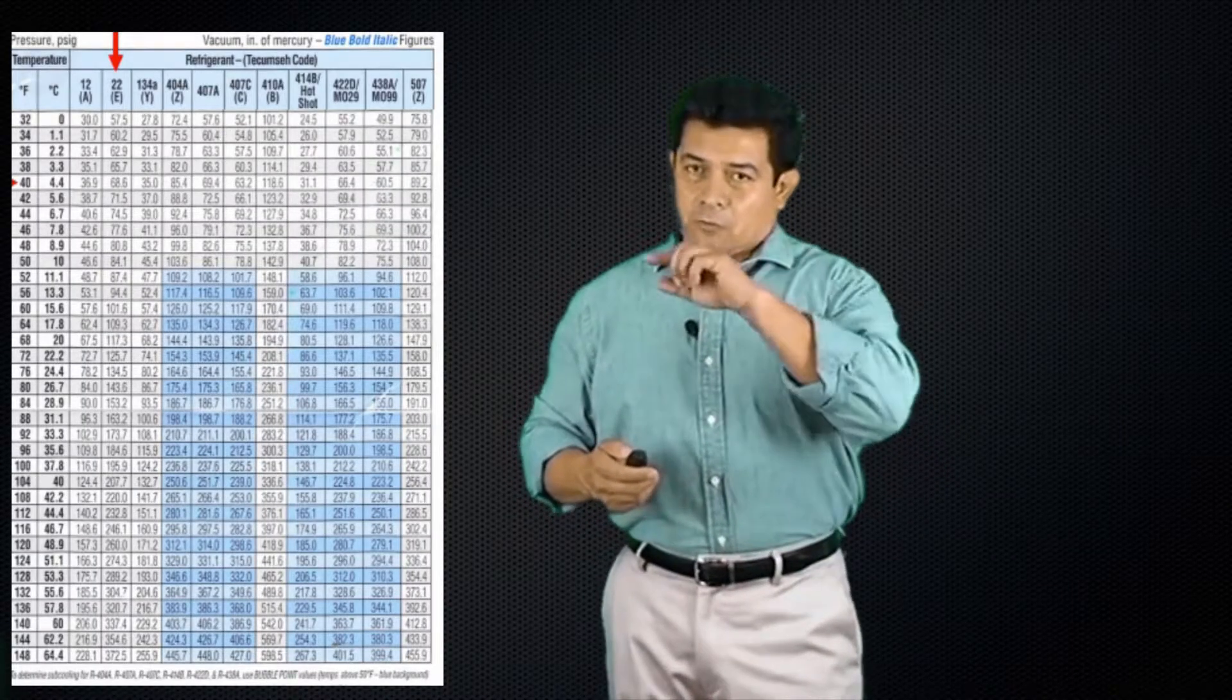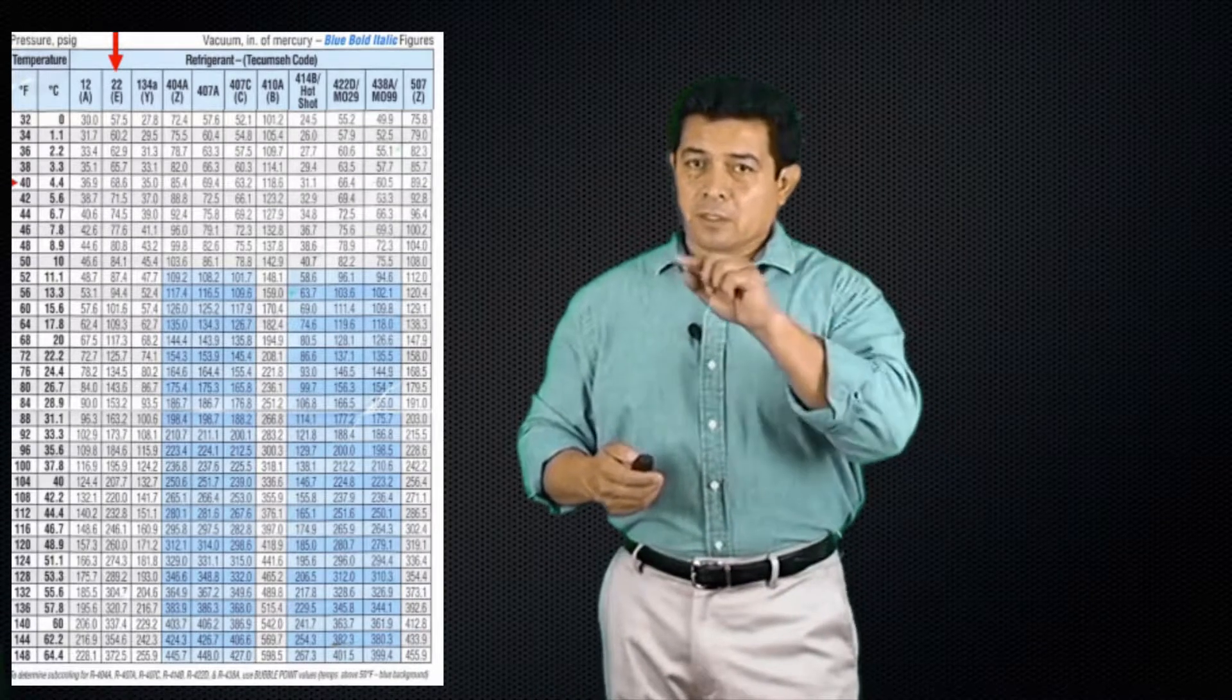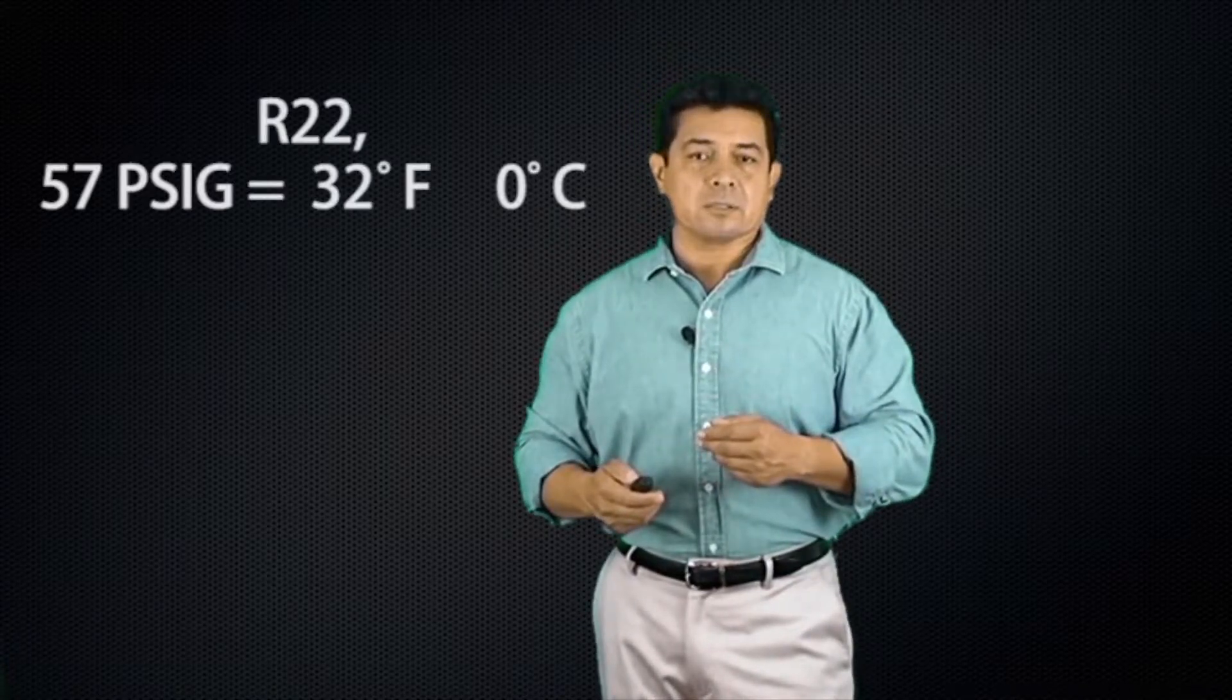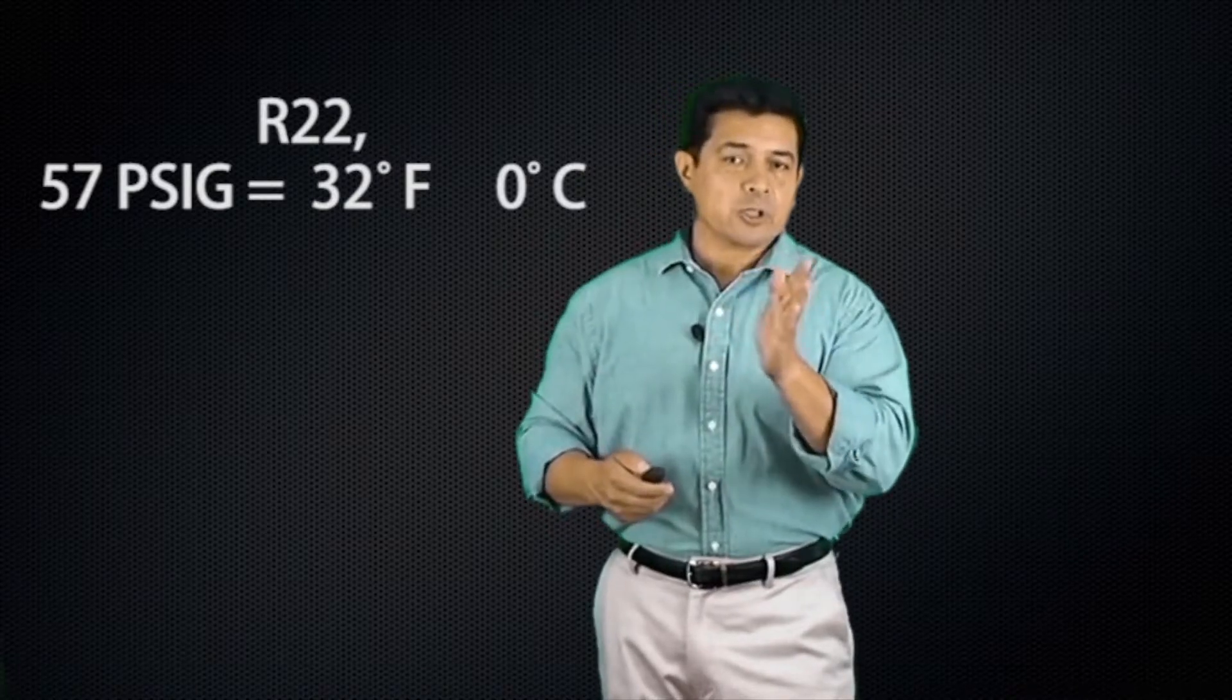Now, if you think about 32 degrees Fahrenheit or zero degrees Celsius, what happens at those temperatures? Well, water starts to freeze. So, if we were to look at a PT chart and we look at 32 degrees and check to see what the pressure of that refrigerant is at 32 degrees, if we're dealing with R22, then that pressure is going to be 57 PSIG. So when I see that the pressure drops down to 57, that tells me that my coil is at freezing point. It's going to freeze. It's going to ice up, which of course is not good.